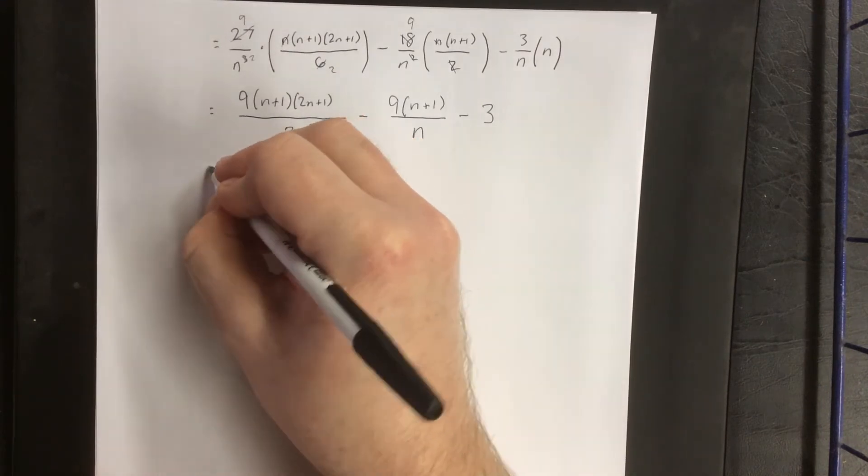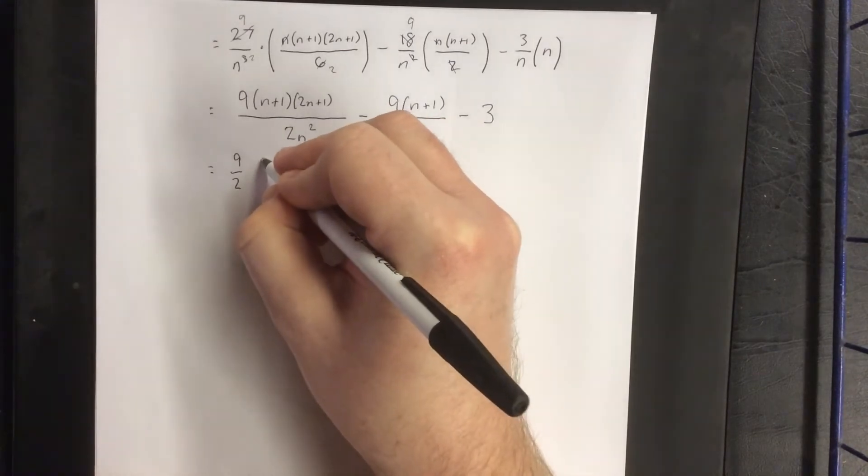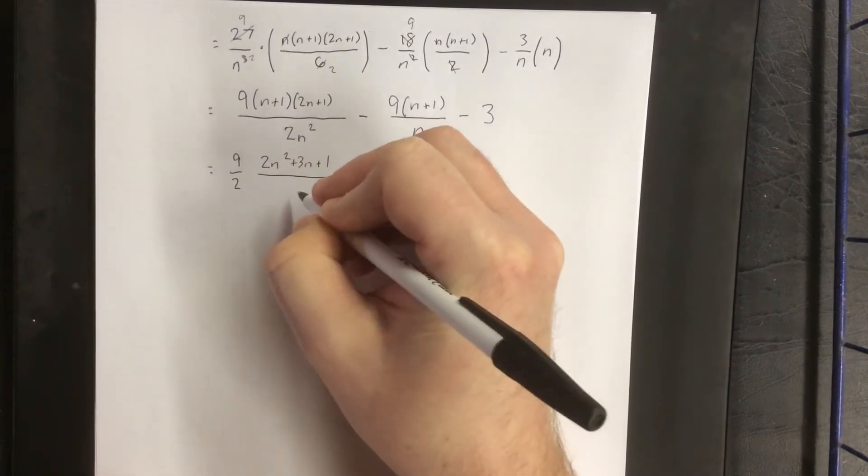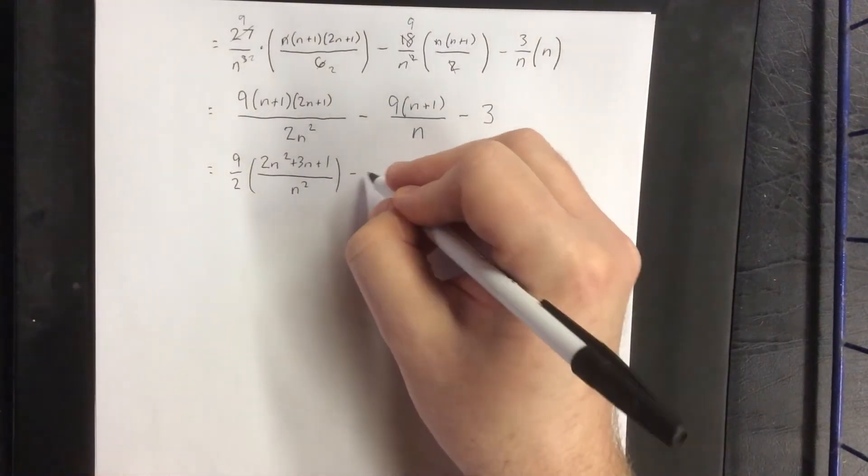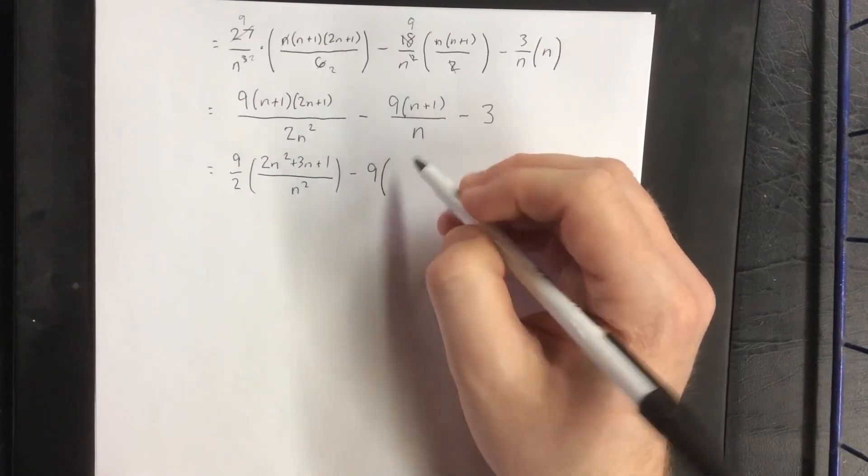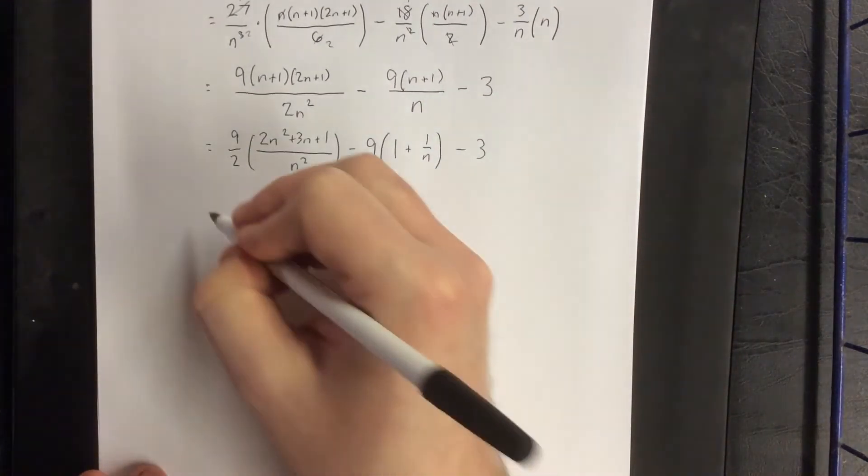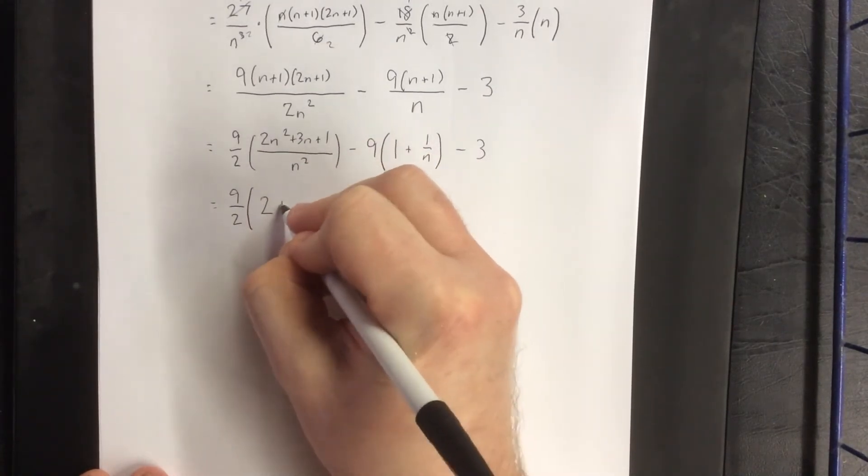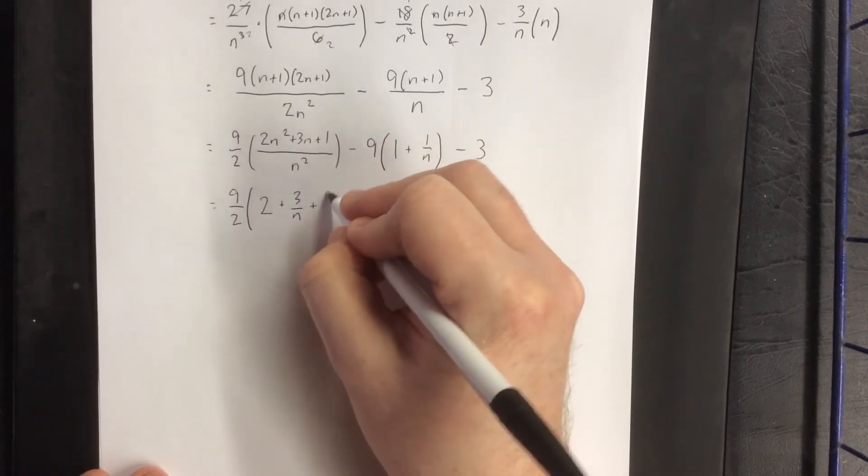In anticipation of the limit that we're about to take, I am going to take the 9 halves out, expand the numerator completely, and at my next step, I'm going to distribute the n squared to all three of these terms. Similarly, I'm going to do that here with the (n plus 1) over n. I'm going to distribute the n to each of these terms, n over n plus 1 over n. And finally, do the same for the first set of parentheses. 2n squared over n squared is 2. 3n over n squared is 3 over n, and 1 over n squared is simply 1 over n squared.